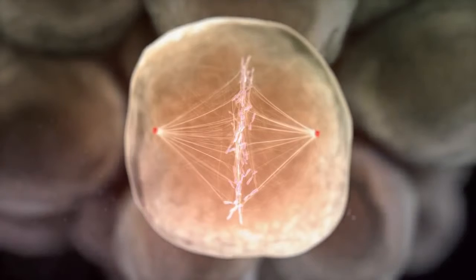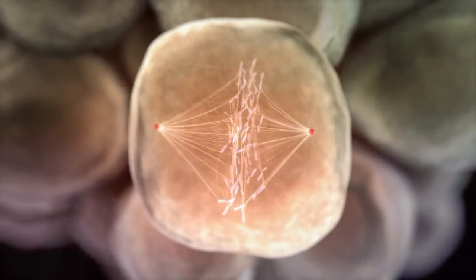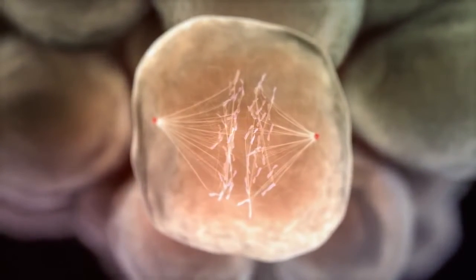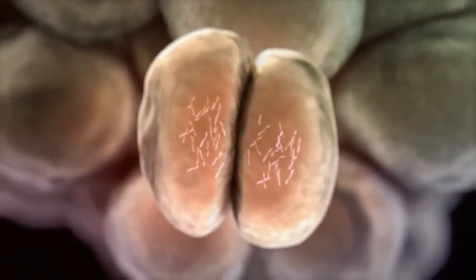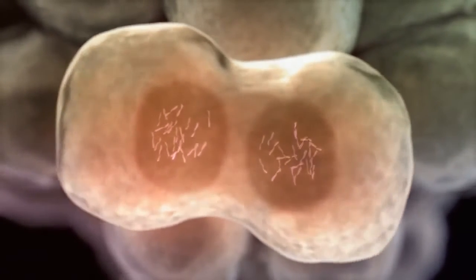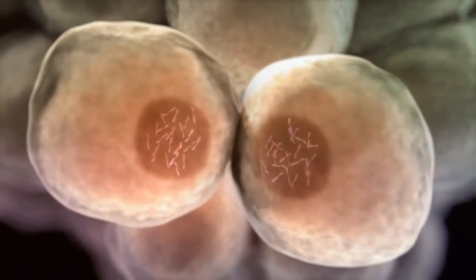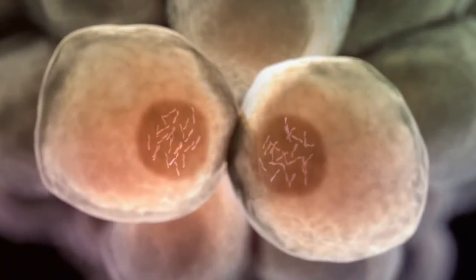The centrioles begin to play a game of tug-of-war, breaking the chromosomes. Since the separated strands of DNA are identical, each new nuclei that forms contains an exact copy of the original DNA.